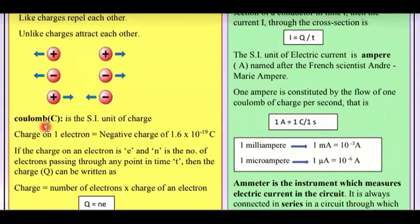Coulomb, represented by capital C, is the SI unit of charge. Just as we represent distance in meters or KM, or liquid in liters, if you have to represent how much charge there is, you represent it with capital C, or coulomb.